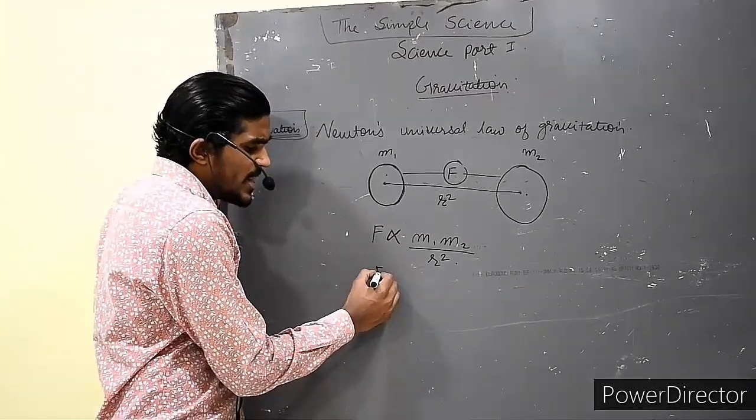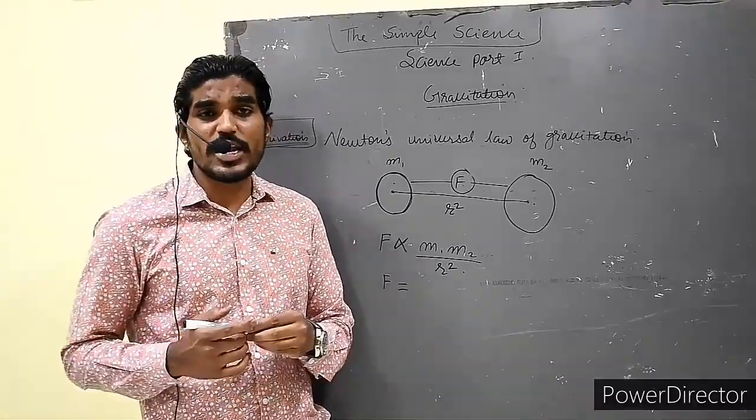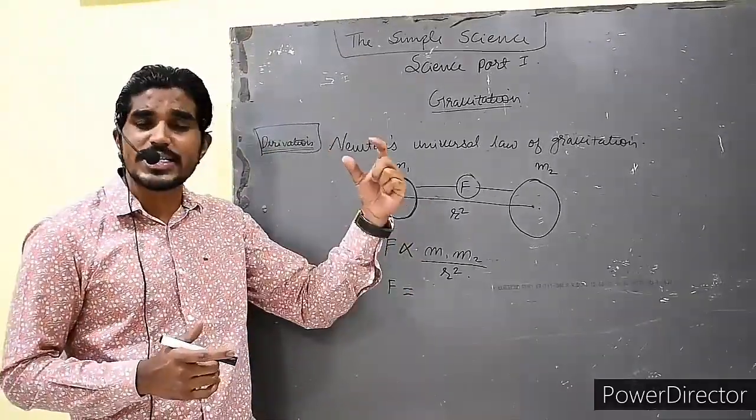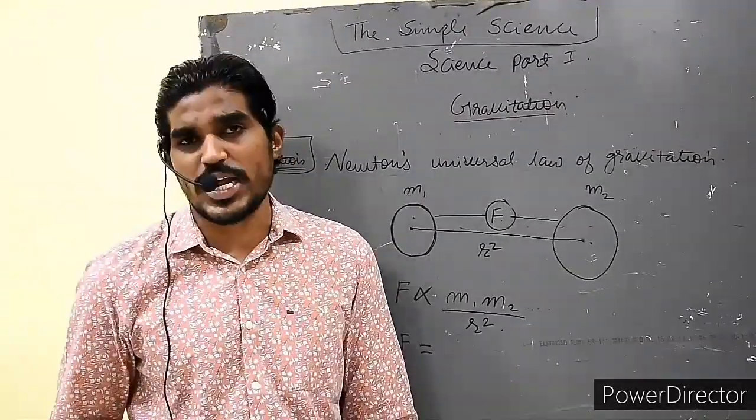So the proportional sign is removed and replaced by equals. In physics, whenever you remove the proportionality sign and replace with equals, you have to put one more constant.